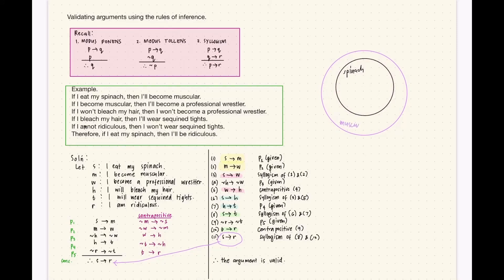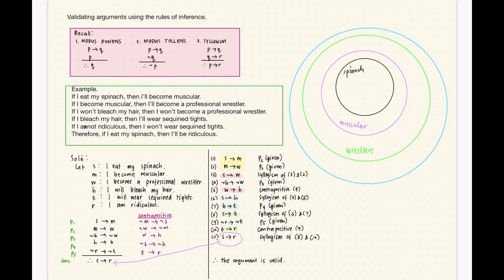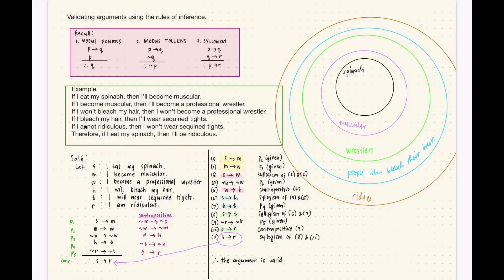We can verify this using an Euler diagram. Those who eat spinach are muscular, so the spinach set is inside the muscular set. Those who are muscular are professional wrestlers, so muscular is inside the wrestler set. Using the contrapositive, wrestlers bleach their hair, so wrestlers are inside the hair-bleaching set. Those who bleach their hair wear sequin tights, and those who wear sequin tights are ridiculous. Therefore, those who eat spinach are ridiculous — the argument is indeed valid.